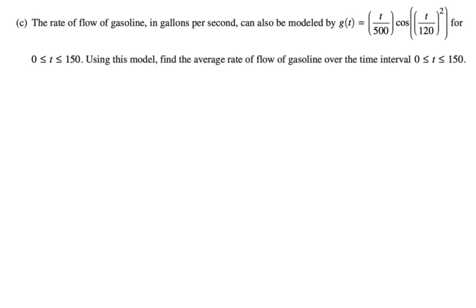The rate of flow of gasoline in gallons per second can also be modeled by G of T, which is T over 500 cosine quantity T over 120 squared. So that's kind of ugly. For 0 to 150, using this model, find the average rate of flow of gasoline over the time interval from 0 to 150.